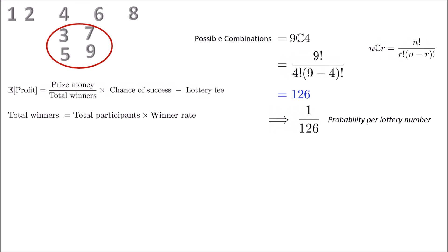And the total winners itself is equivalent to the total number of participants in the competition multiplied by the winner rate, i.e., how many people chose that winning number from the lottery system.